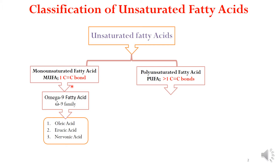The monounsaturated fatty acids are also known as omega-9 fatty acids. The examples of omega-9 fatty acids are oleic acid, erucic acid, and nervonic acid. Oleic acid is the most common of all the omega-9 fatty acids.